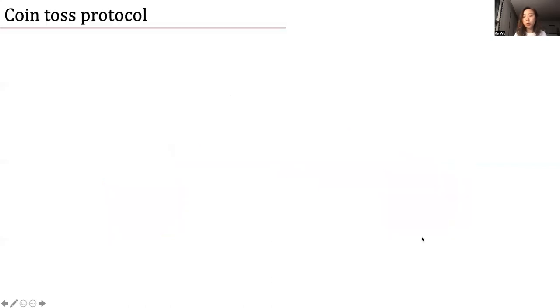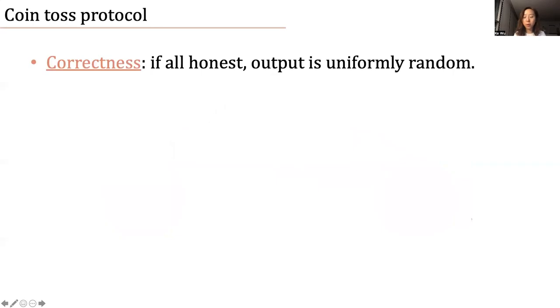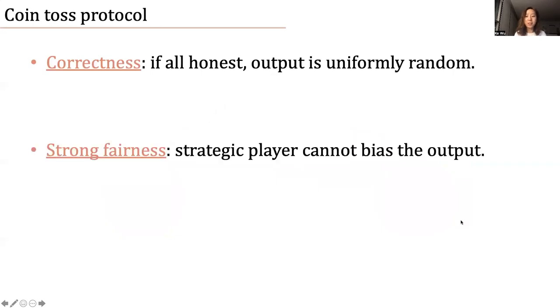Formally in a coin toss protocol, we want to toss a uniformly random coin. The fairness notion considered in traditional crypto literature is called strong fairness or unbiasability, which requires that a strategic player cannot bias the output in either direction.